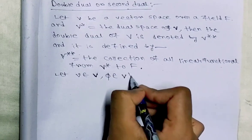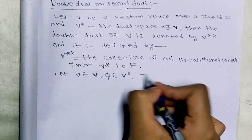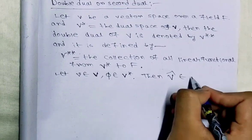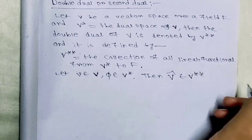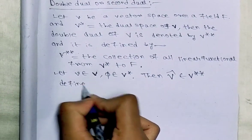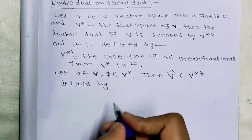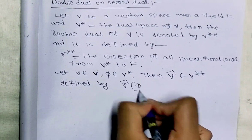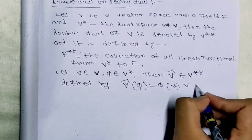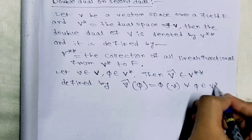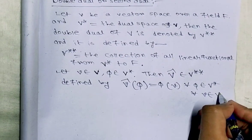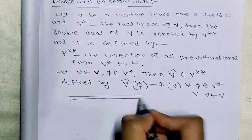Let small v belong to vector space V and phi belong to dual space V*. Then v̂ belongs to V** and is defined by v̂(φ) = φ(v), for all φ in V* and v in V. That is the definition of the double dual.